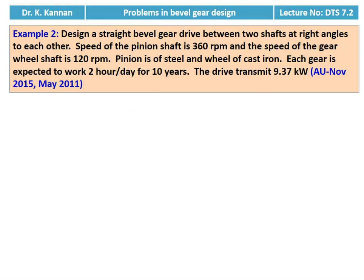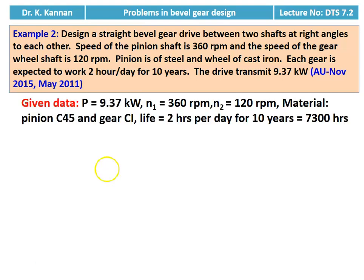The next question is from May 2011 and November 2015 question paper: design a straight bevel gear drive between two shafts at right angles to each other. Speed of the pinion shaft is 360 RPM and speed of the gear wheel shaft is 120 RPM. The pinion is of steel and the wheel is of cast iron. Each gear is expected to work two hours per day for 10 years. Given data: power = 9.37 kW, N1 = 360 RPM, N2 = 120 RPM, material — pinion C45, gear cast iron, life = 7300 hours.